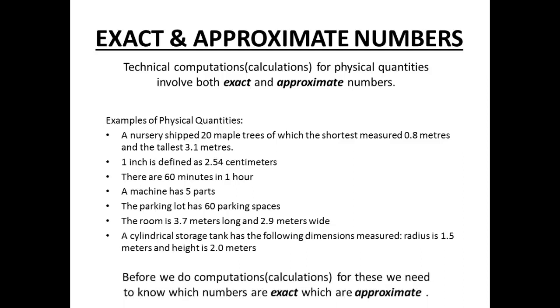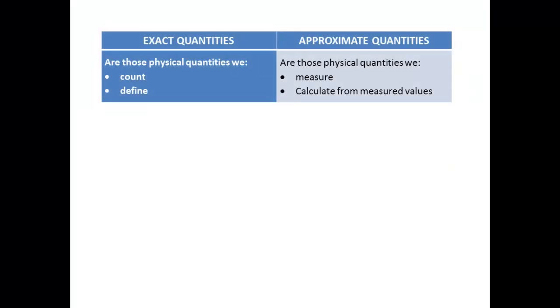Now before we do any calculations with these, we need to know which of all these numbers are exact and which are approximate. So our definition of exact and approximate: exact quantities are going to be those physical quantities that we can count or define, and approximate quantities are going to be those physical quantities that we either measure or that we can calculate from measured values.